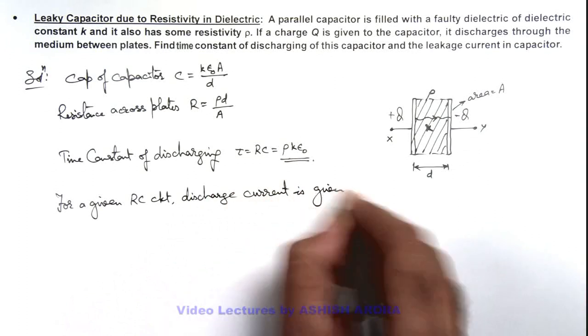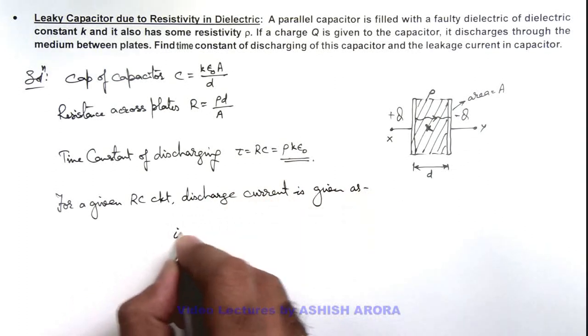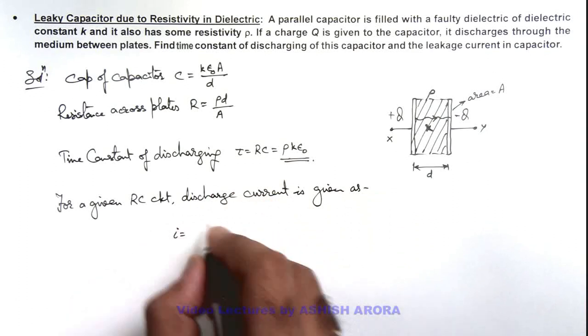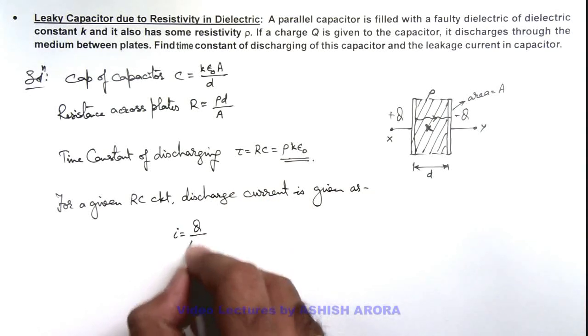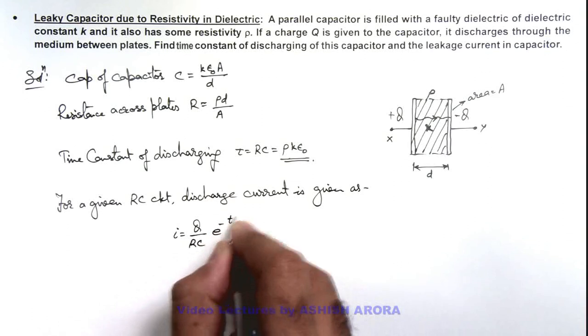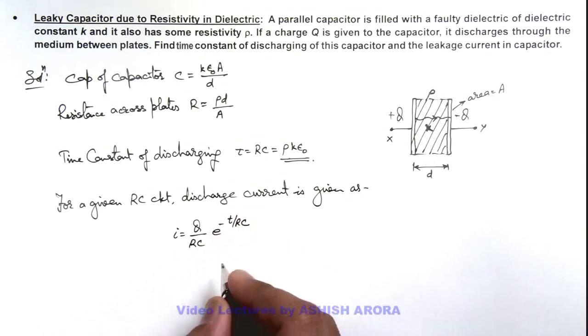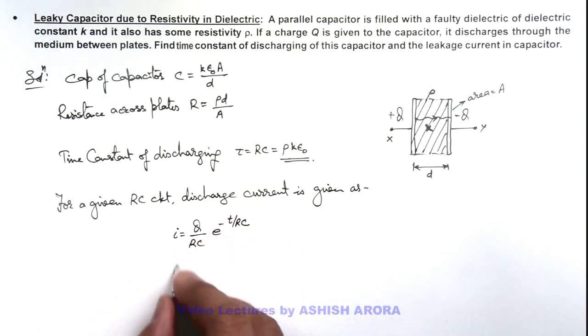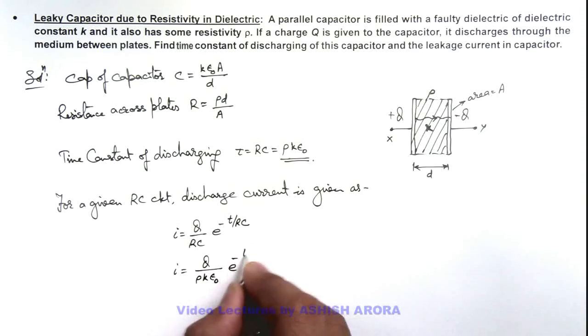i equals q by RC e to the power minus t by RC. So here we can substitute the values, so this current is q by RC we can substitute as rho k epsilon naught e to the power minus t by rho k epsilon naught.